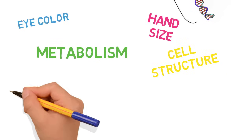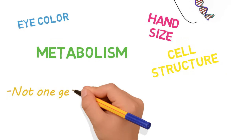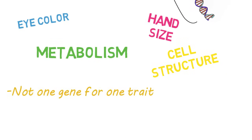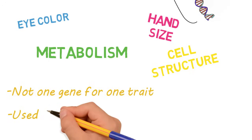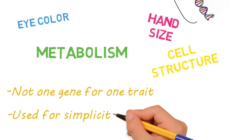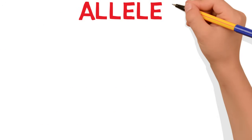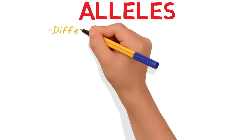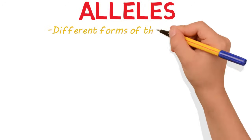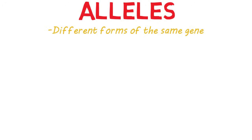It's not as simple as one gene for one trait, but most basic biology classes discuss it this way for simplicity. Alright, let's move on to alleles. Alleles are different forms of the same gene — think of it as a different flavor or variety.